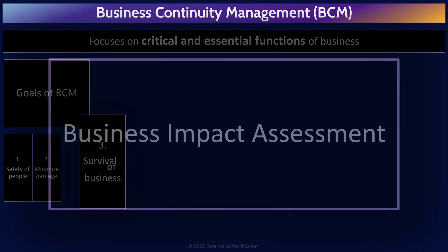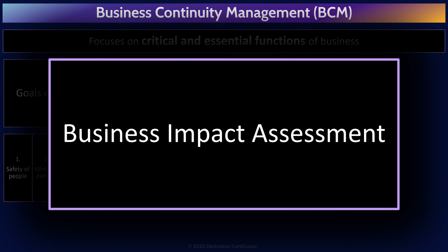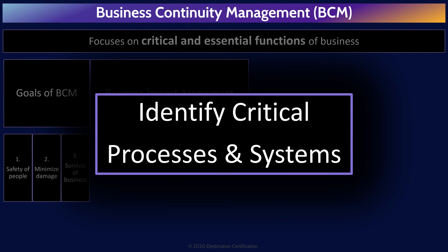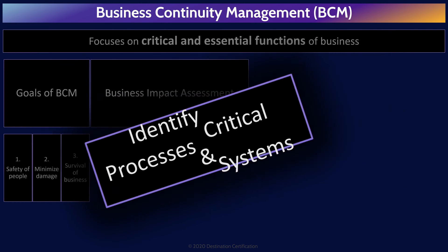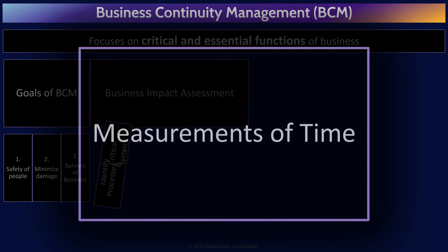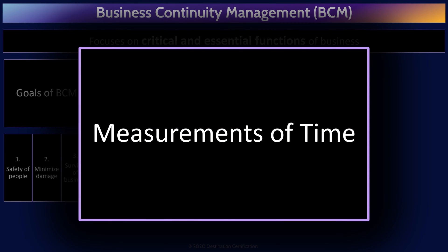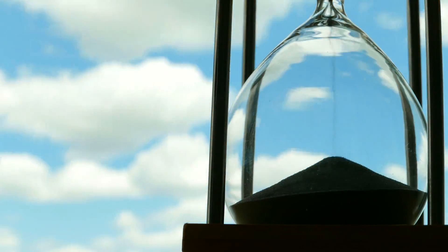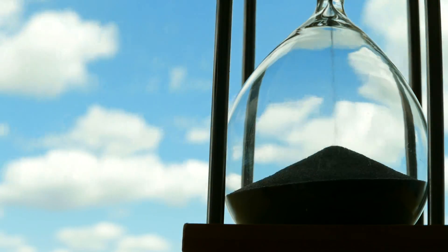The first major process that we perform in business continuity management is the business impact assessment. It is through the BIA that we identify the most critical business processes and systems by consulting stakeholders from across the organization. The major output of the BIA process is four different measurements of time that have been approved by the process or system owner.